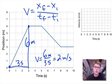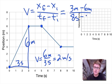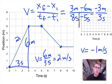Let's figure out the velocity of the man in the next segment. The final position is 3 meters and the initial position is 6 meters. The final time is 8 seconds and the initial time is 5 seconds. So this is negative 3 meters divided by 3 seconds, giving a velocity of negative 1 meter per second. So our speeds across segments were: 2 m/s, then 0 (man not moving), then negative 1 m/s, then 0 again.